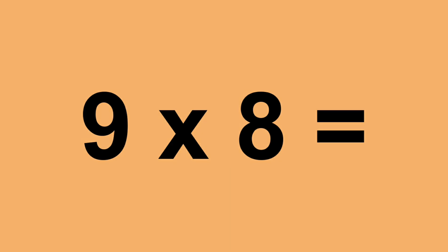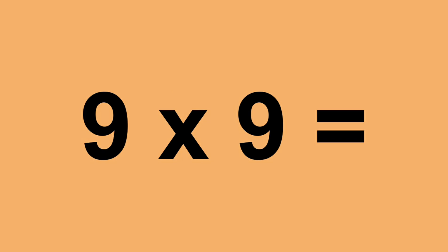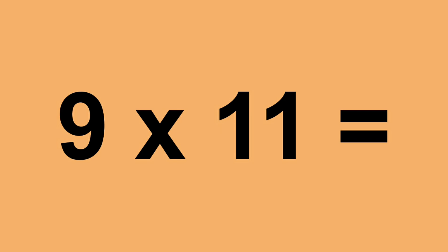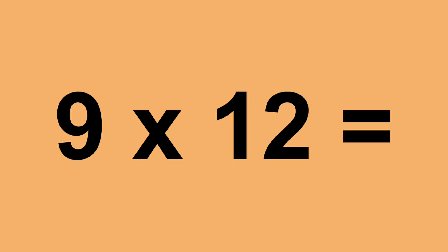Nine times eight equals seventy-two. Nine times nine equals eighty-one. Nine times ten equals ninety. Nine times eleven equals ninety-nine. Nine times twelve equals one hundred and eight.